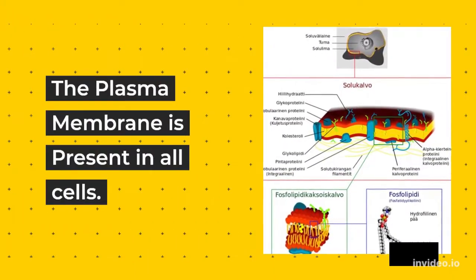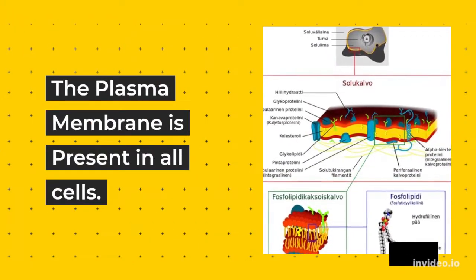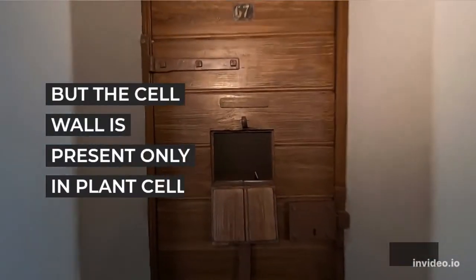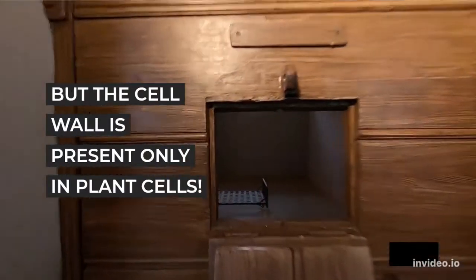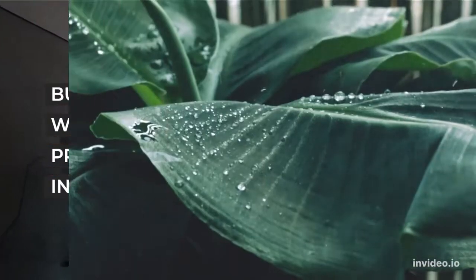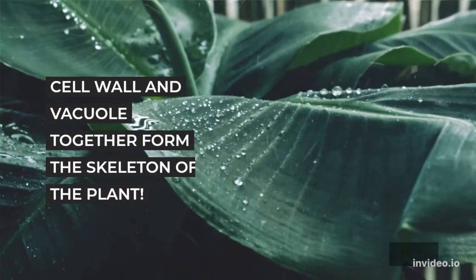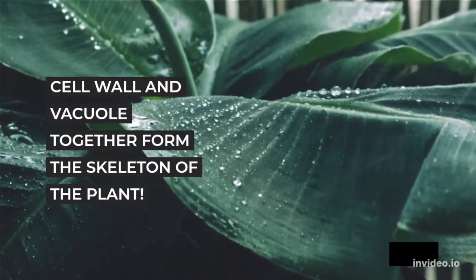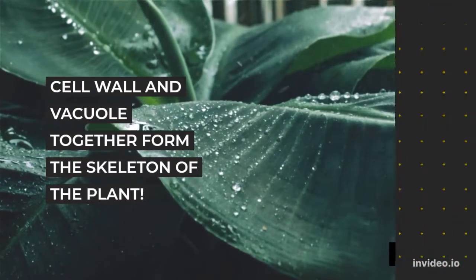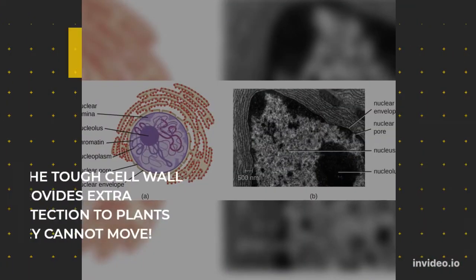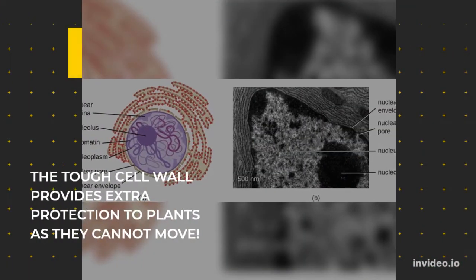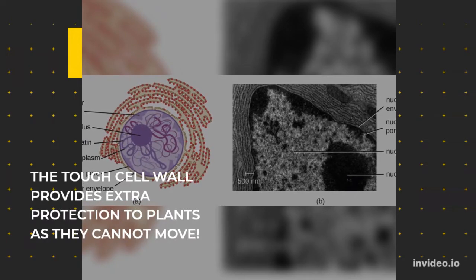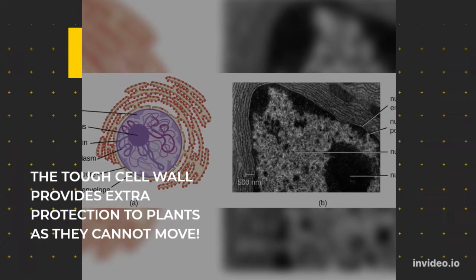The plasma membrane is present in all cells, but the cell wall is present only in plant cells. The cell wall and vacuole together form the skeleton of the plant. The tough cell wall provides extra protection to plants, as they cannot move.